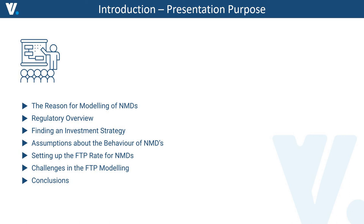In the last part, we will be talking about funds transfer pricing and pricing of non-maturity deposits. We will be allocating the price to this product from two different angles: first, reflecting the interest rate risk component in the price, and second, recognizing the liquidity premium and the tenor which this product should have. The liquidity value of this product is extremely important — it is the cheap source of funding for banks, and therefore correct recognition of its liquidity value is of utmost importance.